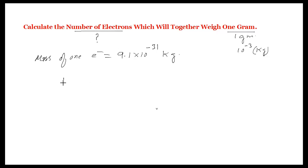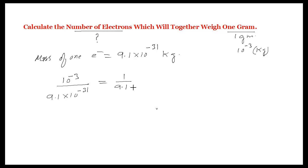So the total weight here is 10 to the power minus 3, divided by the mass of one electron which is 9.1 into 10 to the power minus 31. This will be equal to 1 by 9.1 into 10 to the power minus 3 plus 31.